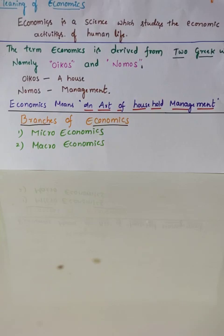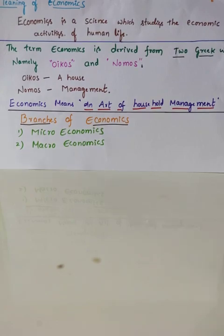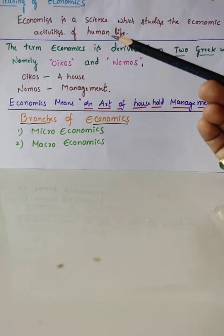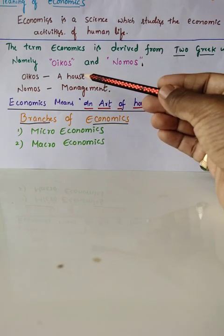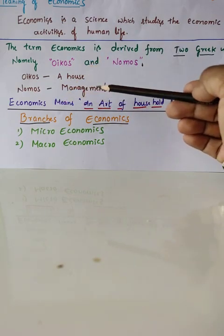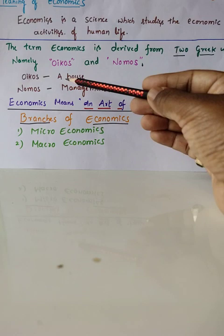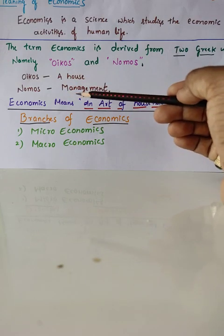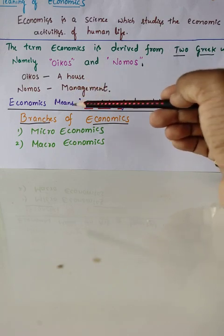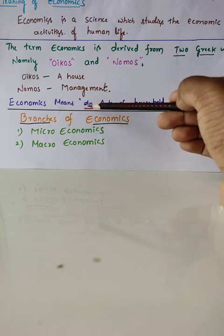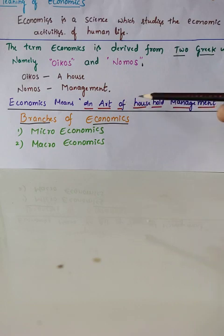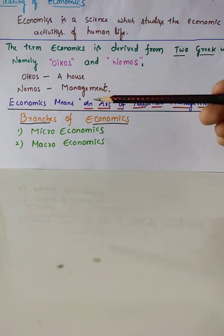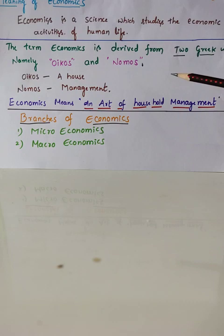Economics is derived from two Greek words. One is ECOS and the other is NOMOS. ECOS means a house and NOMOS means management. Here, house means country — how to manage the country. So economics is the art of household management.